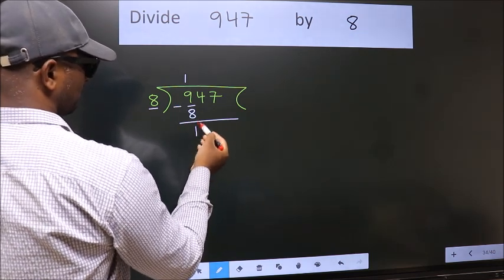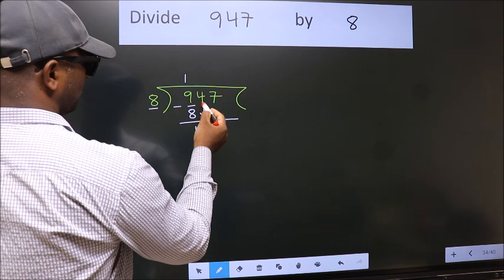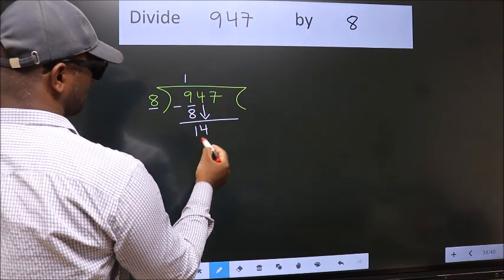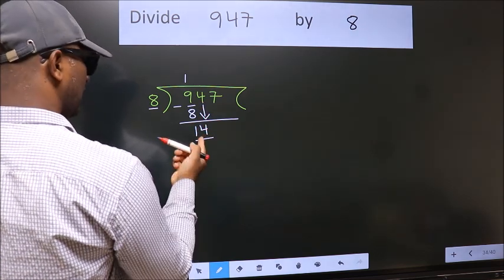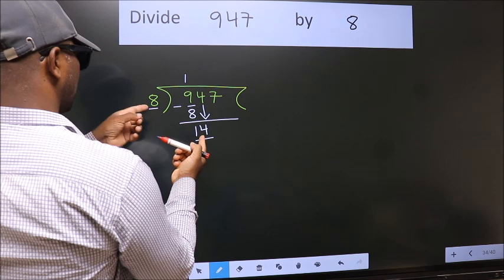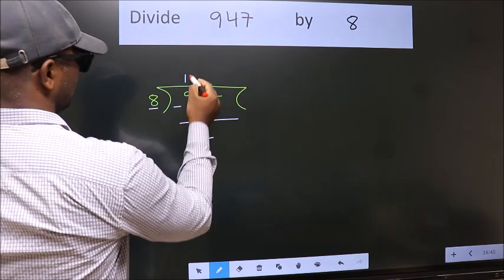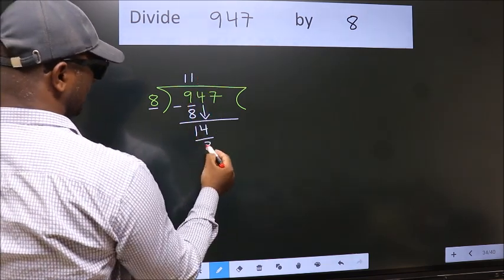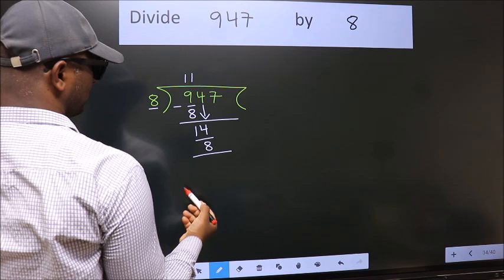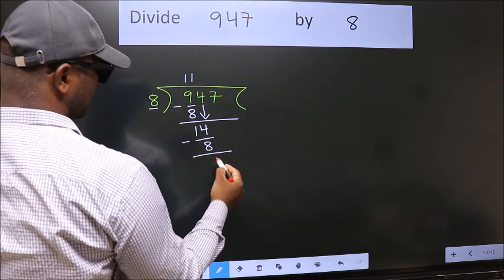After this, bring down the beside number. So 4 down. So 14. A number close to 14 in 8 table is 8 once 8. Now we subtract. We get 6.